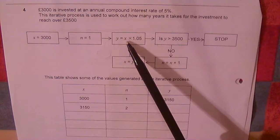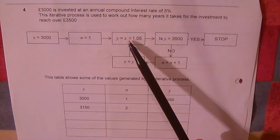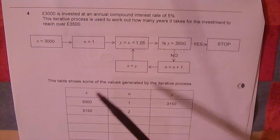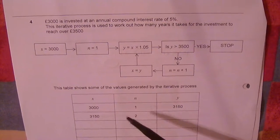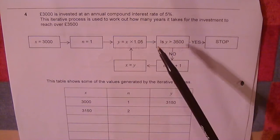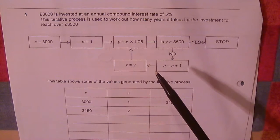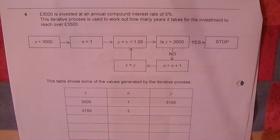And then I have my input amount and that's multiplied by 1.05 to give me my output amount. We can see that there. £3,000 in the first iteration is multiplied by 1.05, and that gives me an output of £3,150.